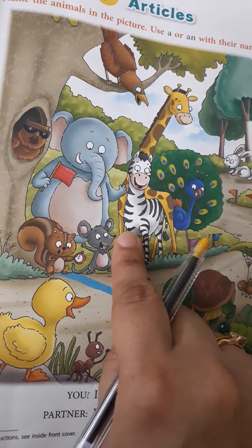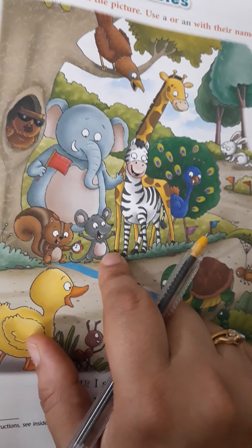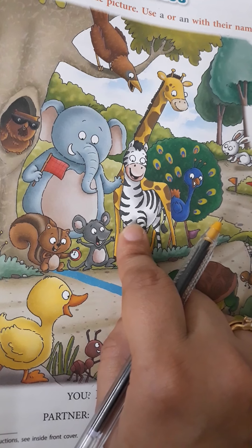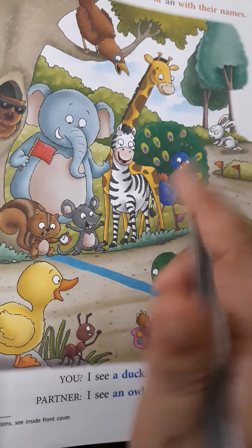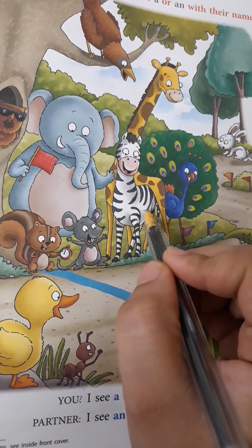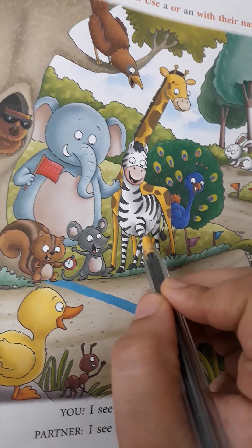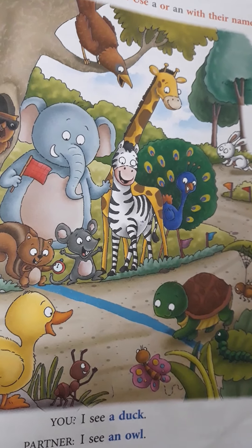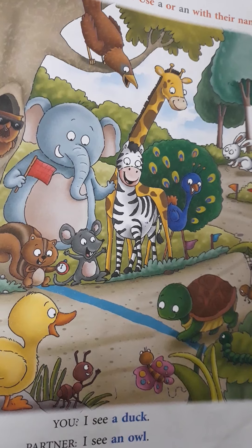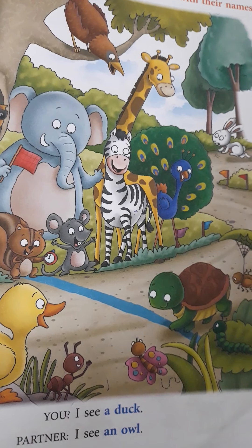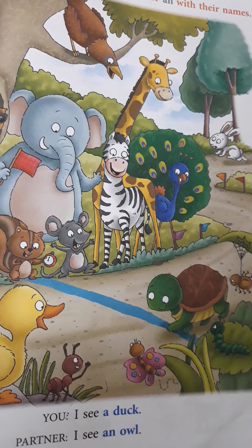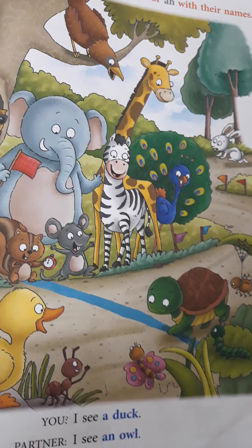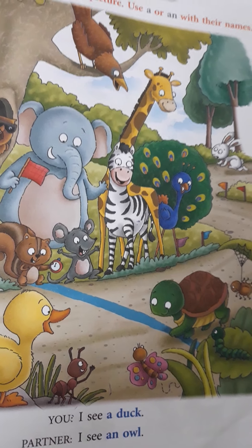So, we can write A or AN in front of their names. Now, we have to see with which animal we will write A and with which animal we will write or say AN. Now, zebra starts with Z. Z. Is Z a vowel? You quickly sing that song. A, E, I, O, U. Do you find Z in that? No. There is no Z there. So, what do we write here? A or AN? ZEBRA. It starts with Z. Z is a consonant. So, simply we have to write A. Okay? A ZEBRA.